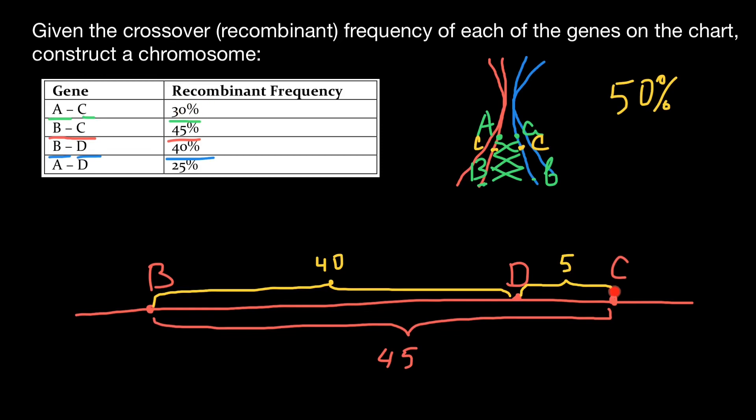So 30 means that we have to count 30 from this place to somewhere here. So let's say it's going to be somewhere here. We can put gene A here. And between gene A and C, we have 30 centimorgans. We also can say that between gene A and B, we would have 15 centimorgans.